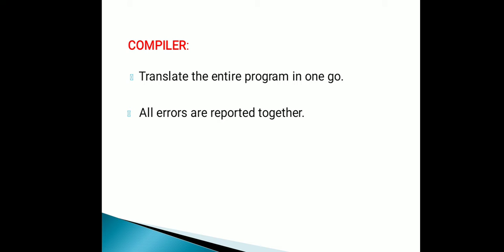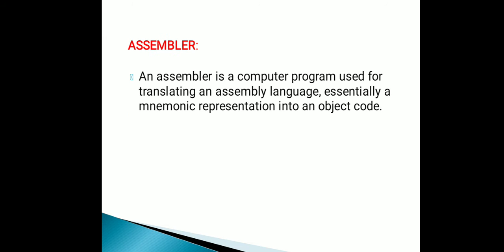The compiler translates the entire program in one go and all errors are reported together. The developer then needs to fix the bugs. After all errors are removed, the program can be recompiled to obtain the object program. If the program is error free, the object program can be directly executed.